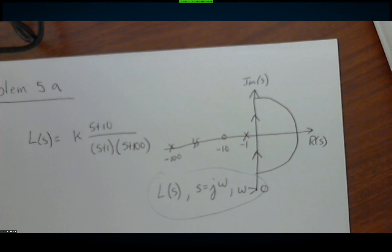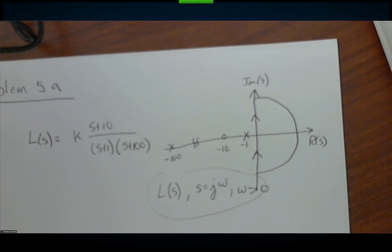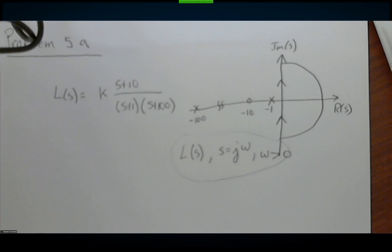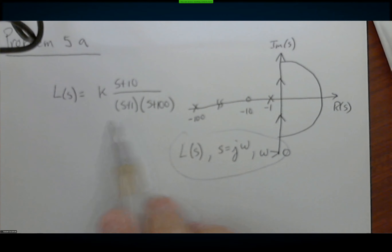There are two ways to do this. When doing homework and wanting an exact solution, MATLAB is really the way to go. However, on an exam you'll need to know the basics of how to plot these things — specifically, how to make an asymptotic Bode plot. I'm going to do this two ways: first the asymptotes of the Bode plot, and then MATLAB for a more exact result.